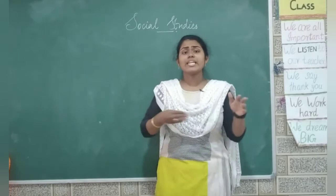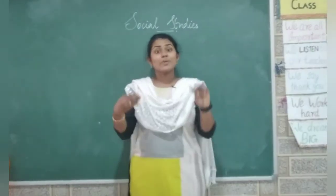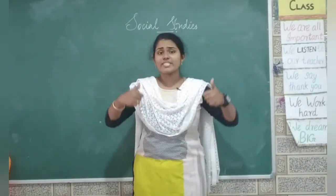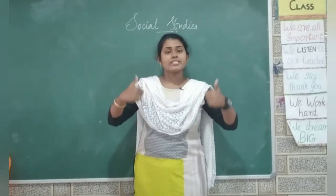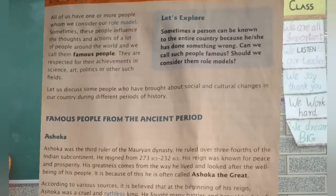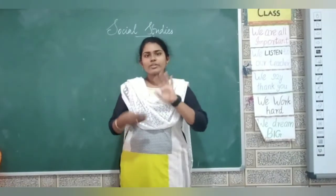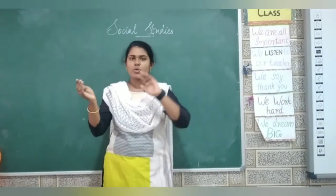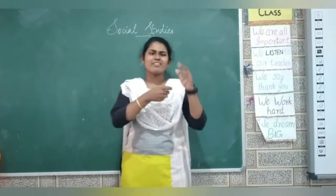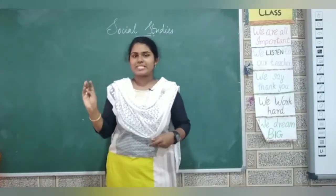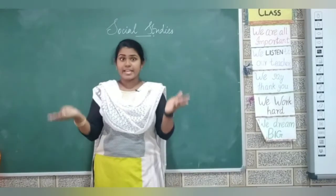Now let's move into our class directly. Our procedure is reading and explaining. You need your student's book — please take your social studies student's book, page number 74. Here we are going to learn about famous people from the ancient period, the medieval period, and the present time. Three parts. Let's get into that. Take page number 75 and I'm going to read.